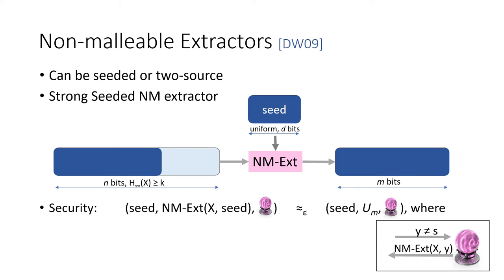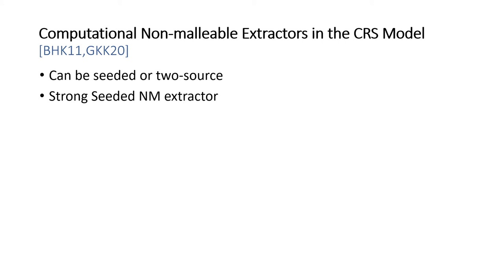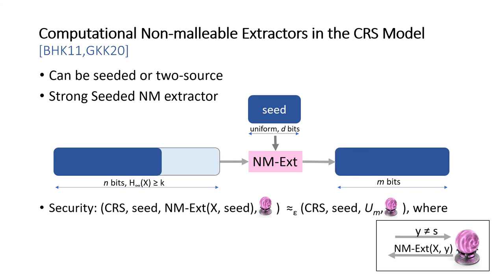This oracle can be queried on any string y not equal to the seed, and it returns the output of the non-malleable extractor computed on x and y. In the information-theoretic setting, one typically needs to bound the number of times the adversary can query such an oracle. In the computational setting, non-malleable extractors are defined similarly — they can be seeded or two-source. We care about strong seeded non-malleable extractors with computational indistinguishability from uniform in the CRS model. The key difference is that the adversary is allowed to query the oracle an arbitrary polynomial number of times, with no explicit a priori upper bound.